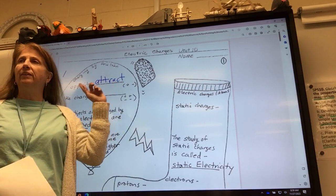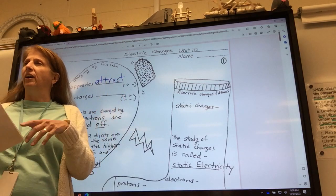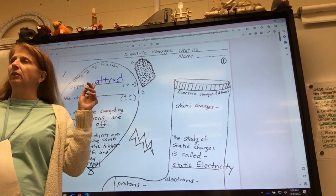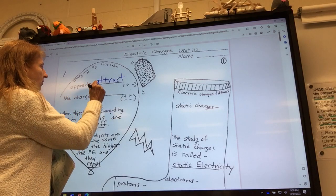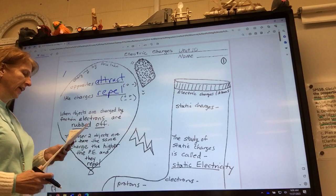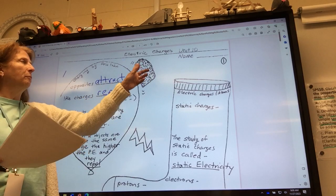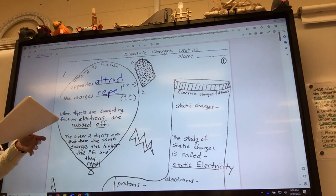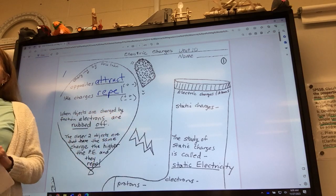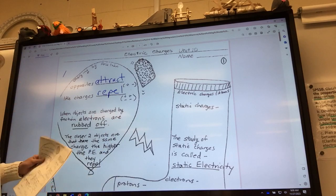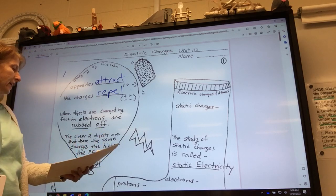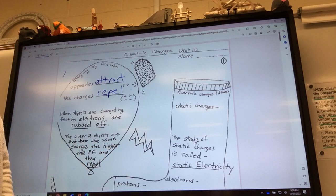So positive and negative are attracted to each other. And then what do like charges do? Repel. So that would be positive and positive and negative and negative. So here I've got a little woolen bit rubbing on a balloon and that'd make electricity. When objects are charged by friction, electrons are rubbed off. The closer two objects are that have the same charge, the higher the potential energy and they repel.